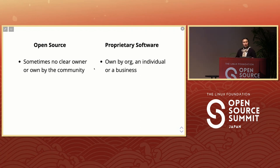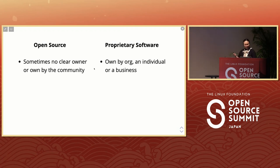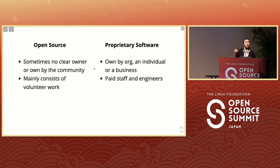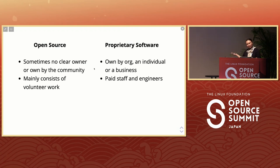Open source — sometimes a project starts with one person or a group, but as time evolves maybe they transfer ownership or take a step back. They don't write every single line of code; community members contribute a lot, so who really owns that software? A lot of open source work is done by volunteers. For proprietary software, since it's owned by a business, they hire staff, and all code written during work time belongs to the company — that's why there's clear ownership.